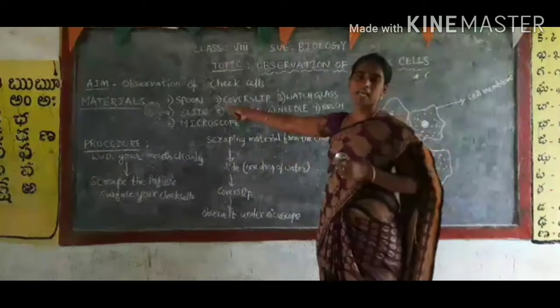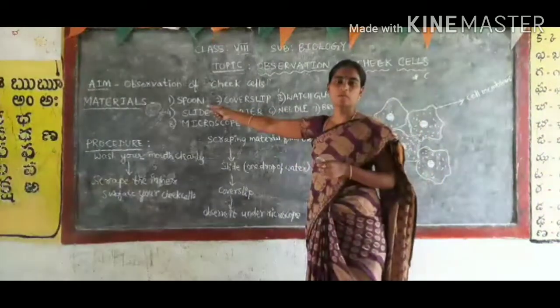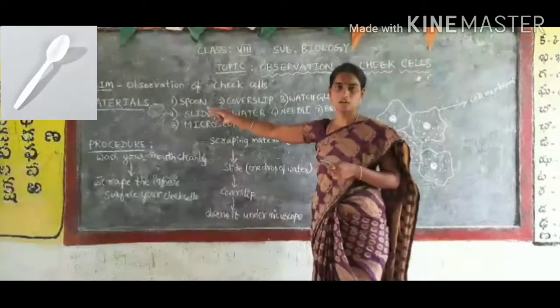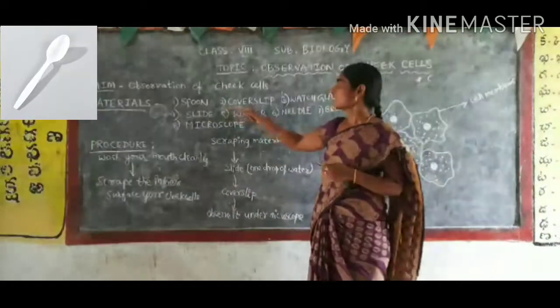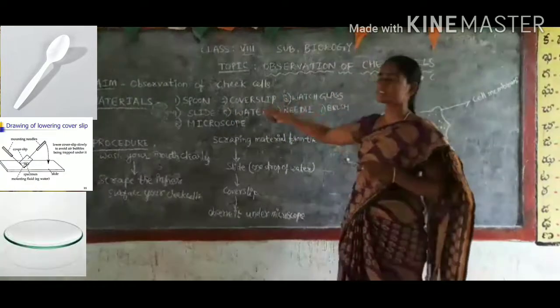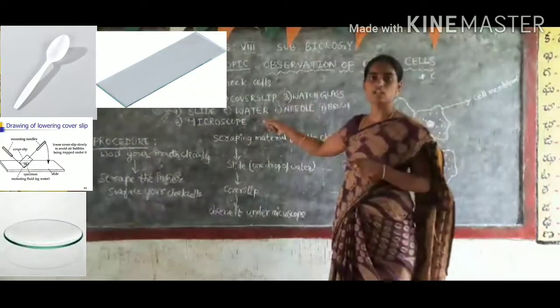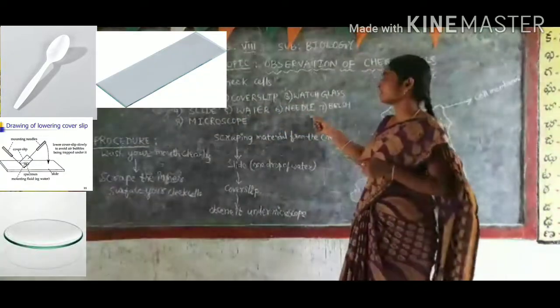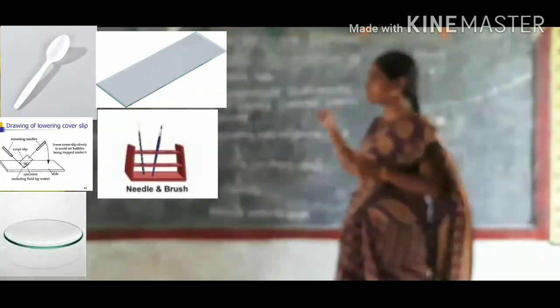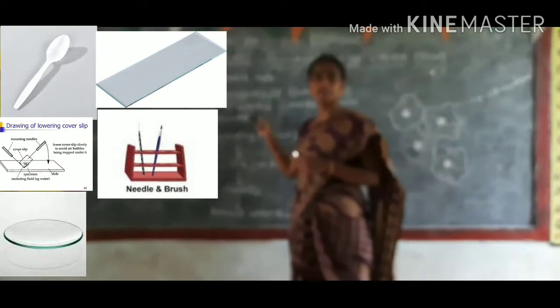The materials required are: one plastic spoon, wooden or steel spoon, or a toothpick; a cover slip; a watch glass; a slide; water and medium; a brush; and a light microscope.